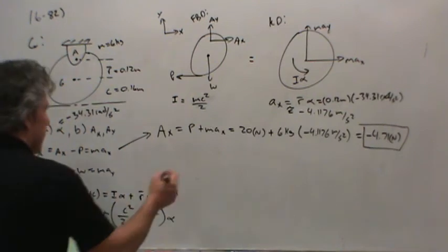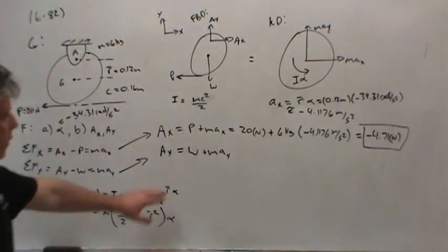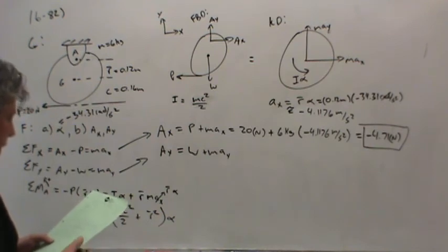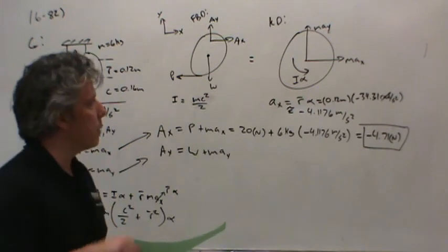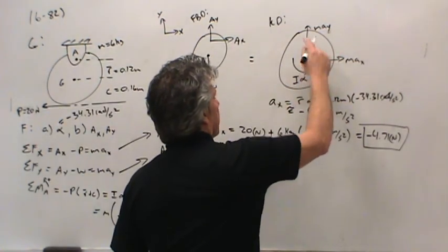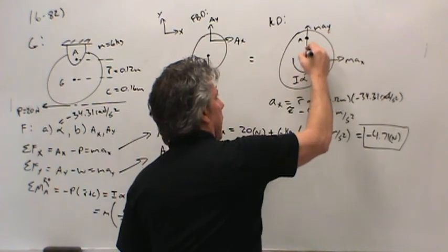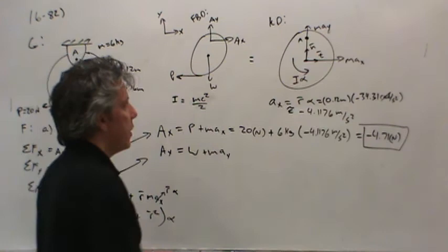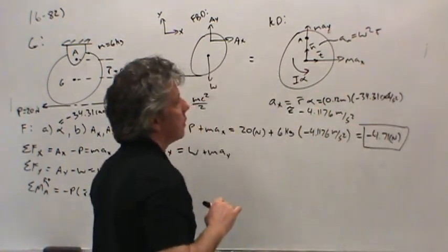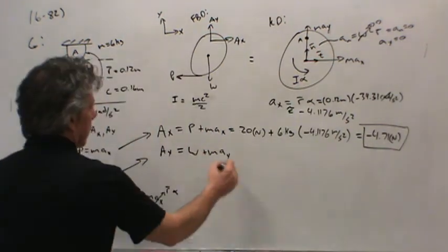Ay equals the weight plus M acceleration in the y direction. We haven't calculated the acceleration of the center in the y direction yet. They told us this thing is just hanging at rest when we apply force P. That means there's no angular velocity. This point is rotating about A. This point would have a tangential and normal coordinate system. The acceleration in the normal direction is omega squared R bar. But omega is zero, so the normal acceleration is zero, meaning Ay is zero. This term just goes away.